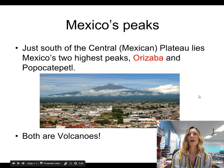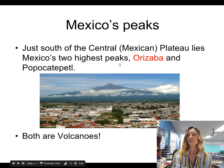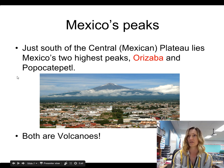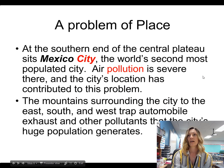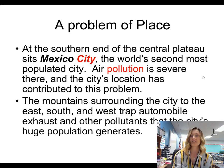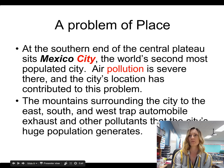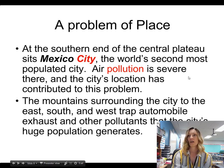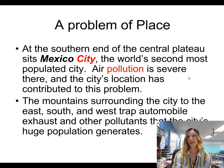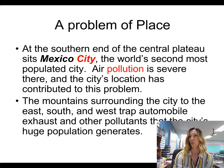Mexico's peaks: just south of the central — sometimes called the Mexican — plateau lie Mexico's two highest peaks, Orizaba and Popocatépetl, and both of these mountains are also volcanoes. At the southern end of the central plateau sits Mexico City, the world's second most populated city. Air pollution is severe there, and the city's location has contributed to this problem. The city is kind of in a valley, below sea level, with mountains surrounding it.